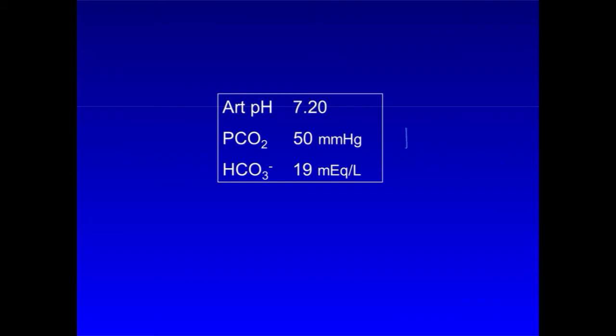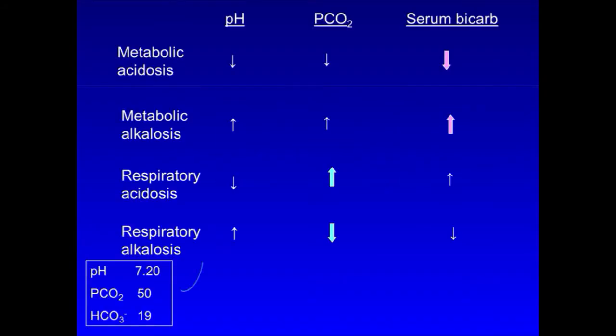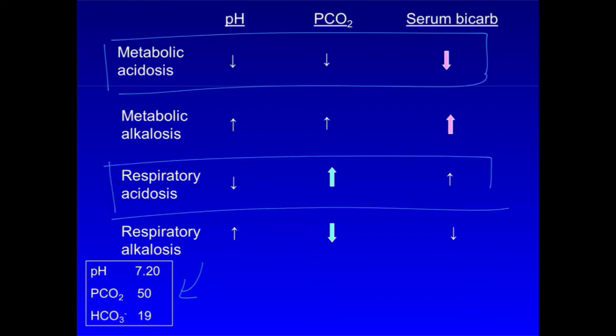The PCO2 is high, with the normal being 40 to 44, but bicarb is low, with the normal being 24 to 28, while pH is very low. So think what combination might result in this set of numbers. As you might imagine, if you combine the two types of acidosis, the respiratory acidosis will increase the PCO2, while the metabolic acidosis will decrease the serum bicarb, and both will decrease the pH.